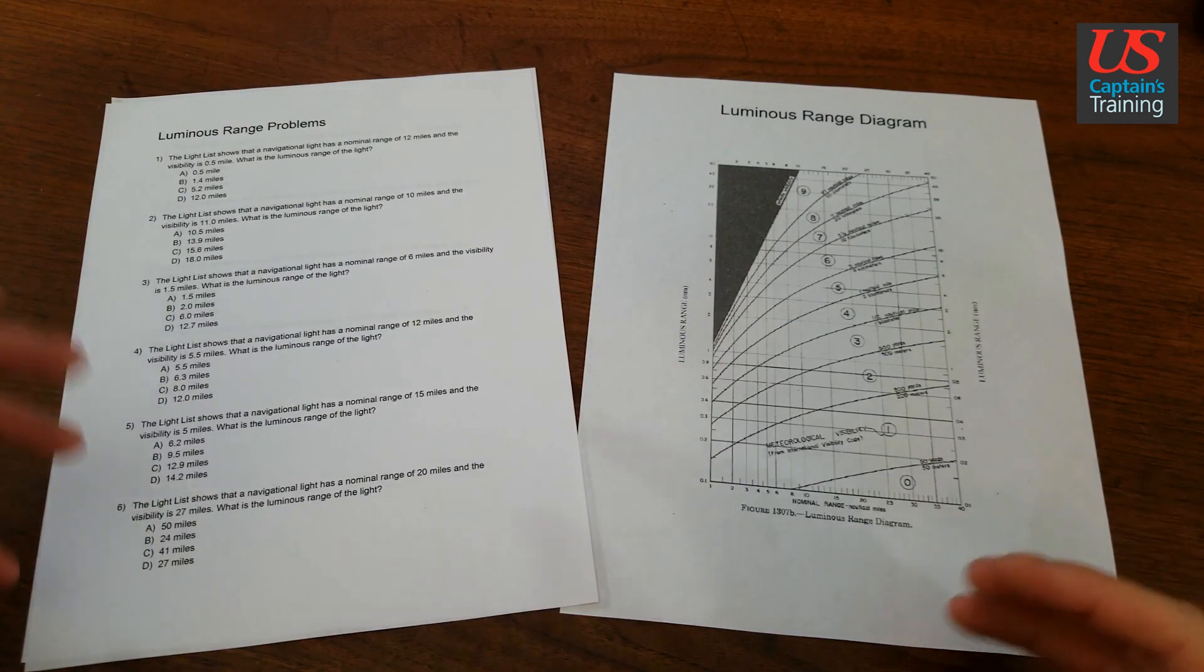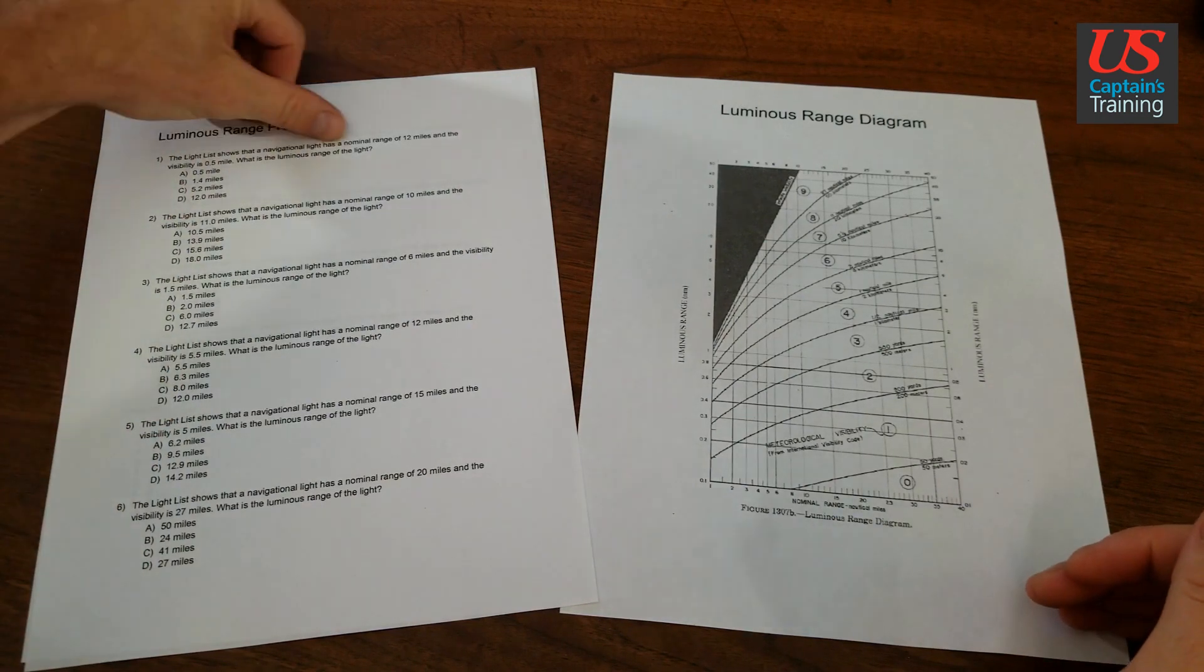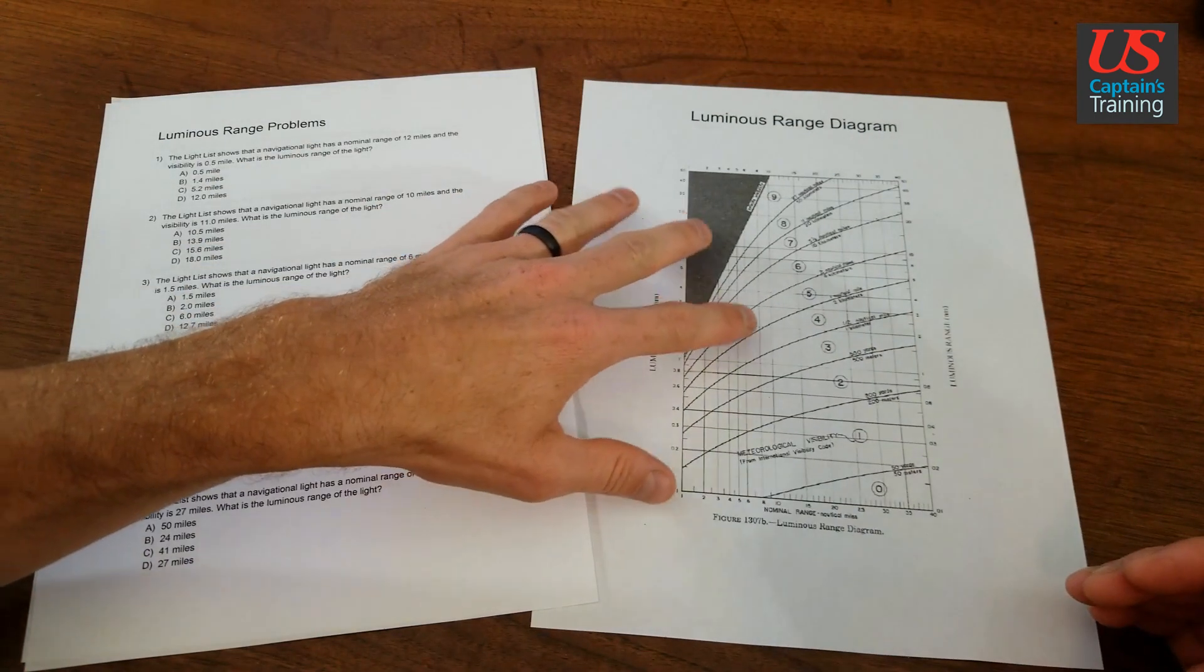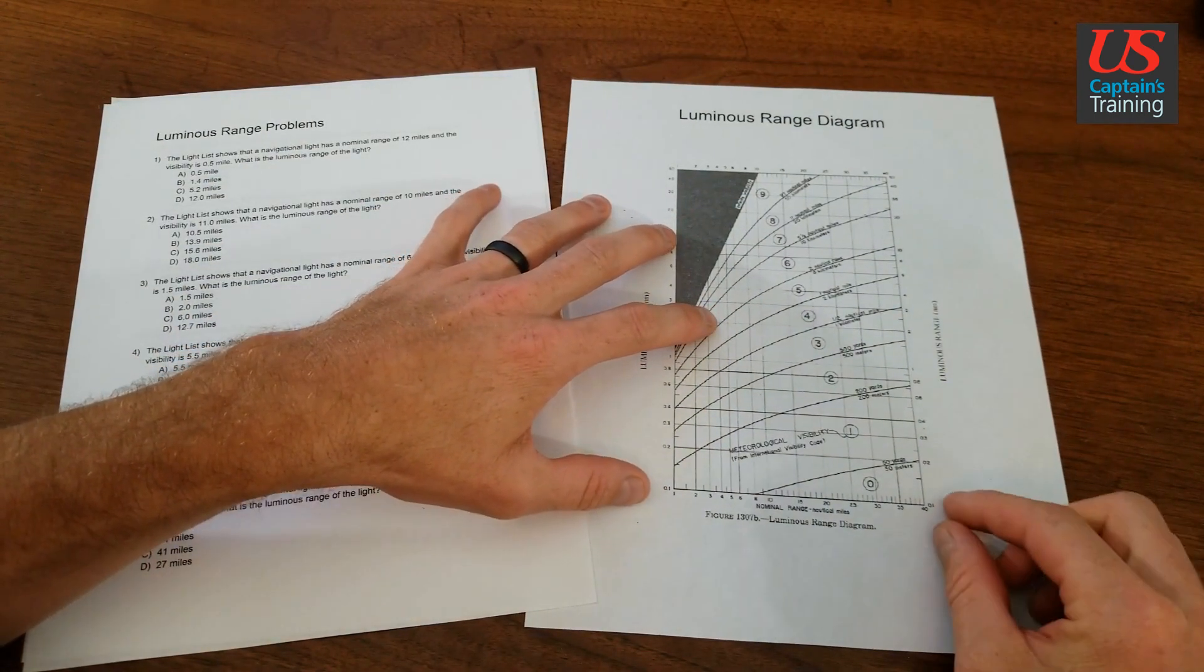Luminous Range Overview. How do we solve a luminous range problem? Each problem gives a nominal range and a visibility, and then we use this luminous range diagram to solve that problem.